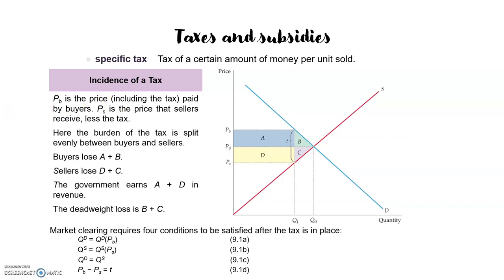Suppose the government imposes a tax of t cents per unit on soft drinks. Assuming everyone effectively pays the tax, the government must receive t cents for every soft drink sold. This means the price the consumer pays must exceed the net price the seller receives by t cents. So the difference between the price the buyer pays (pb) and the price the seller receives (ps) is exactly t.